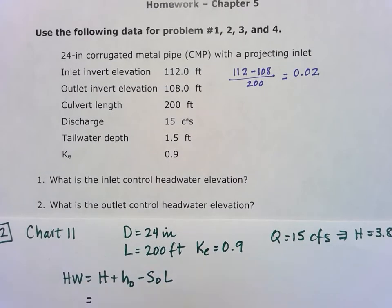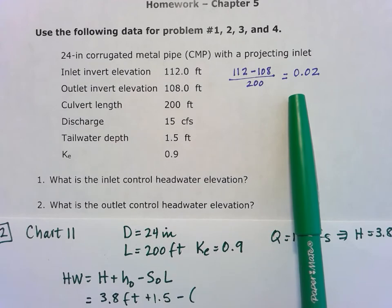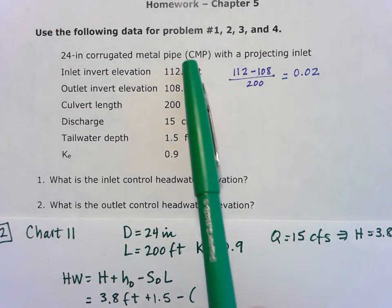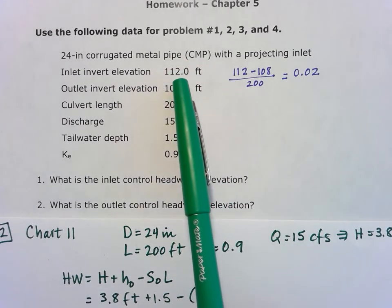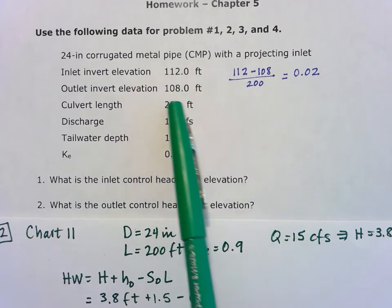For the head, then, it is 3.8 feet plus that tailwater depth is 1.5 feet minus that slope—and I went ahead and calculated that from these different elevations. So inlet invert was 112, outlet invert was 108, and that occurs over a length of 200 feet.